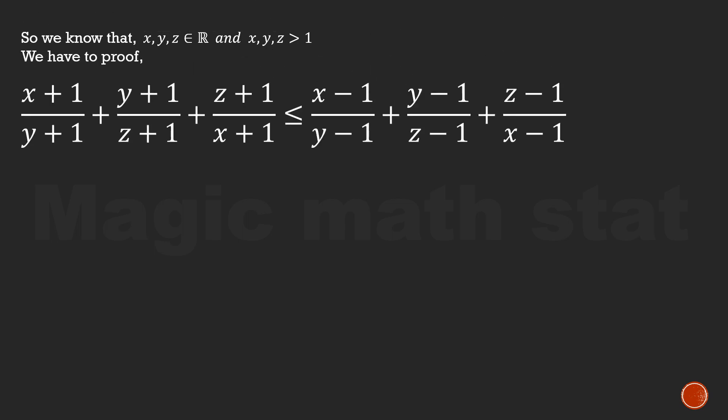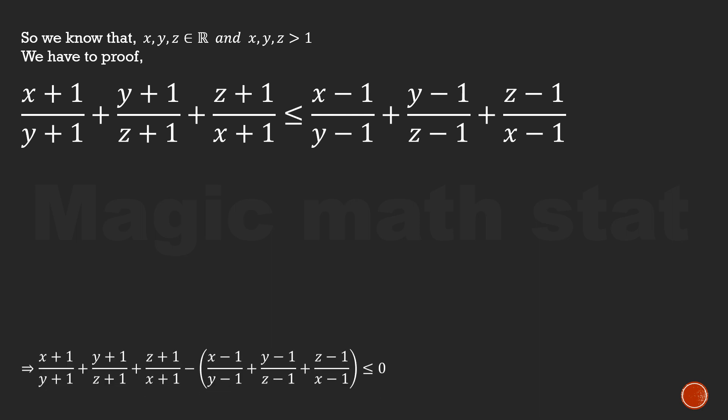We have x, y, z — all are real numbers and all are greater than 1. We have to prove the inequality you can see on the screen. Let's start simplifying the inequality we have to prove.